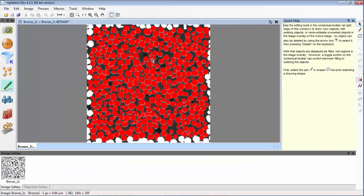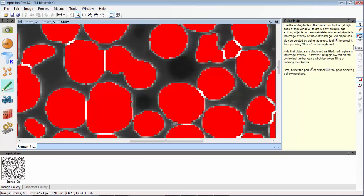If necessary, we can manually edit the results to separate objects that are still touching or reconnect objects that should be together.